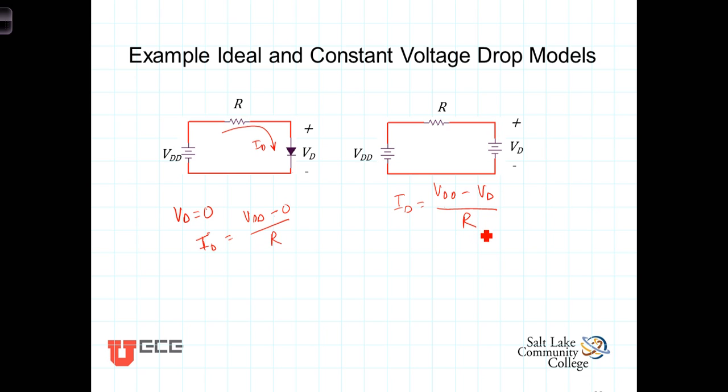To get a feel for the differences that this will make, let's take a look at an example where VDD, the source voltage, is equal to 5 volts, and the resistor is equal to 1 kiloohm. In the ideal model, the current, then, would be I sub D would equal the 5 volts minus the 0, divided by the 1 kiloohm, which would give us 5 milliamps.